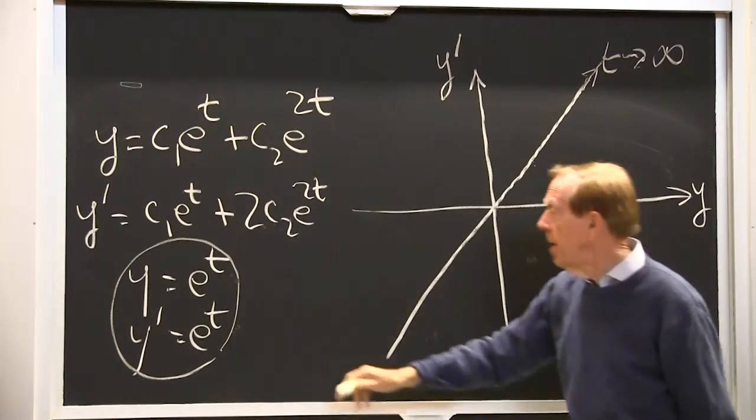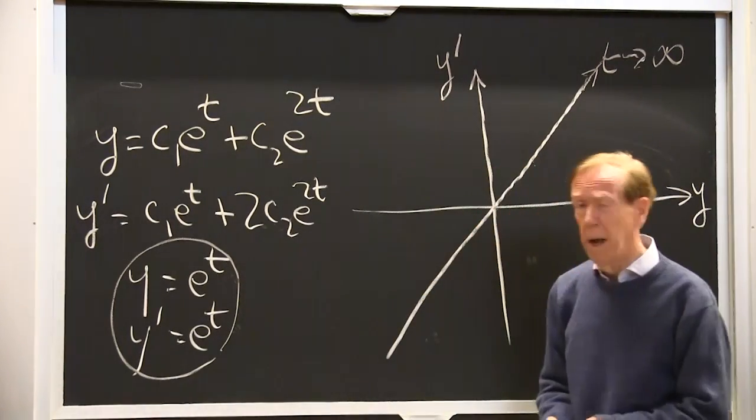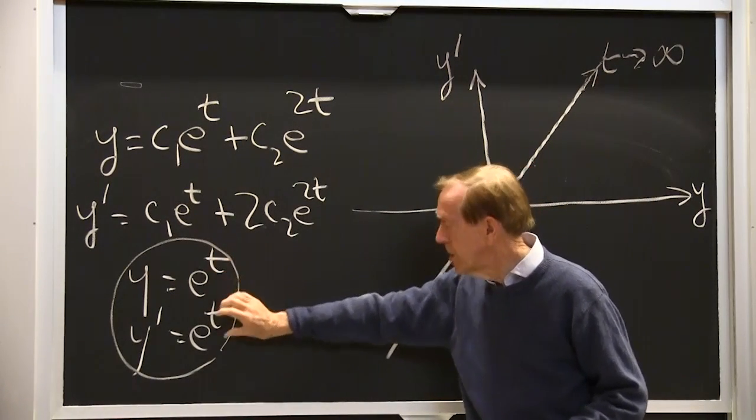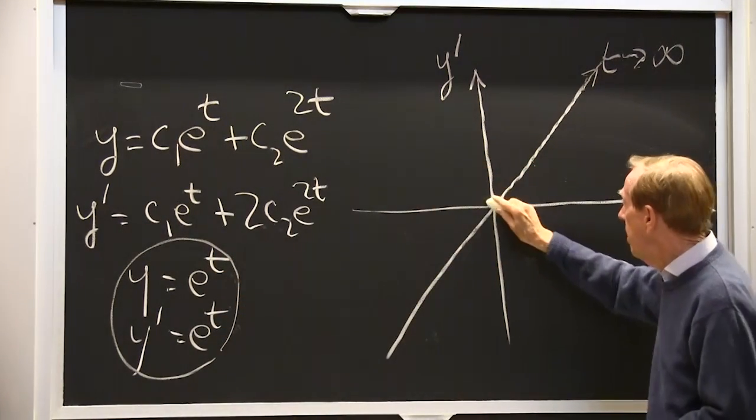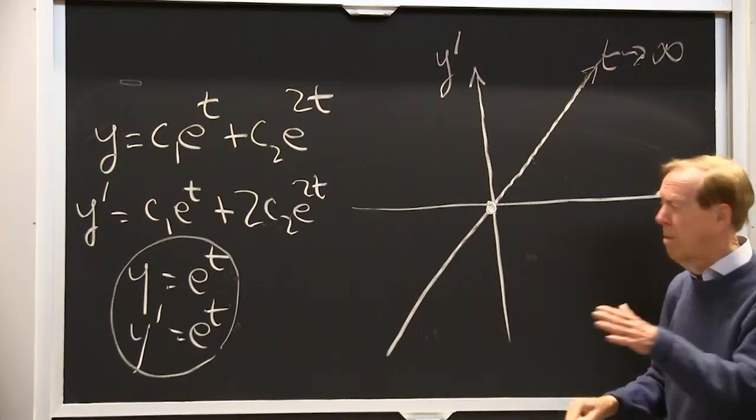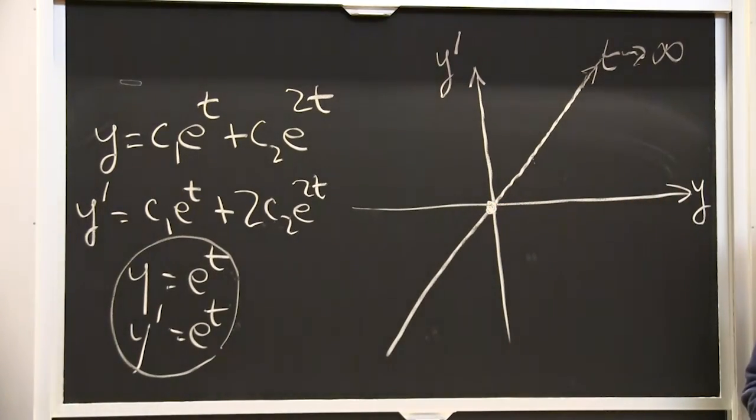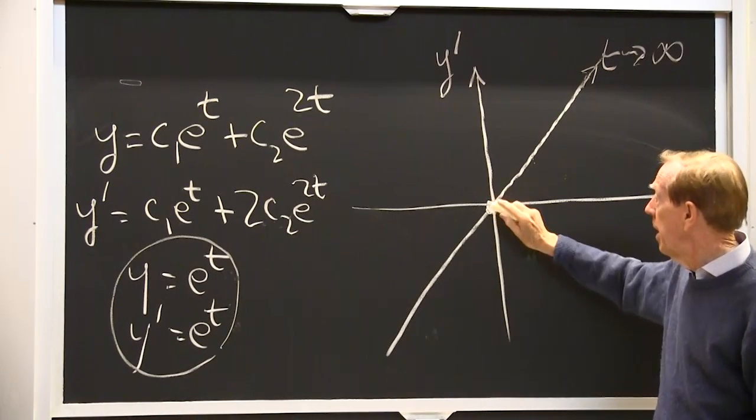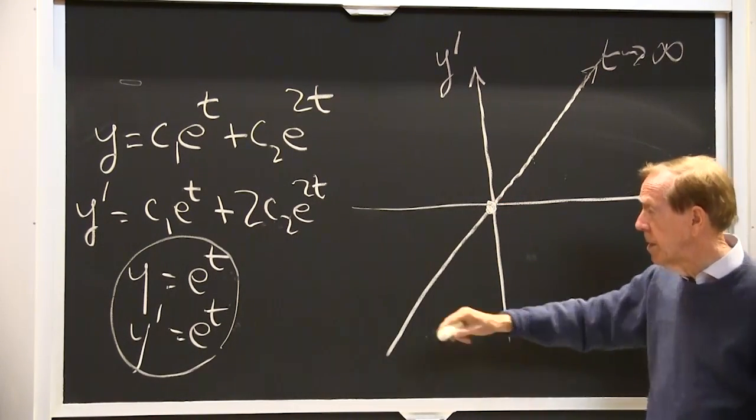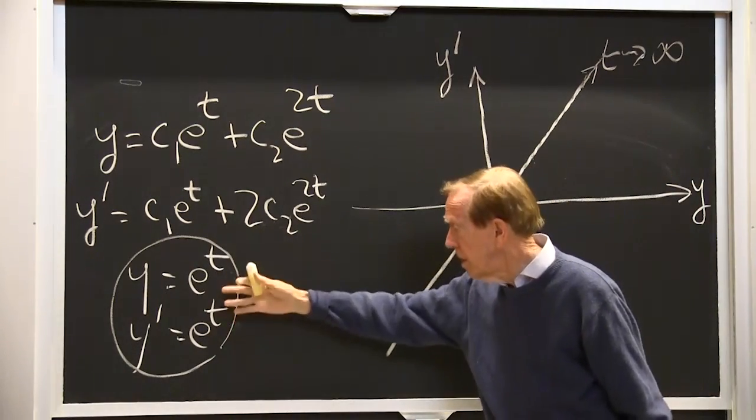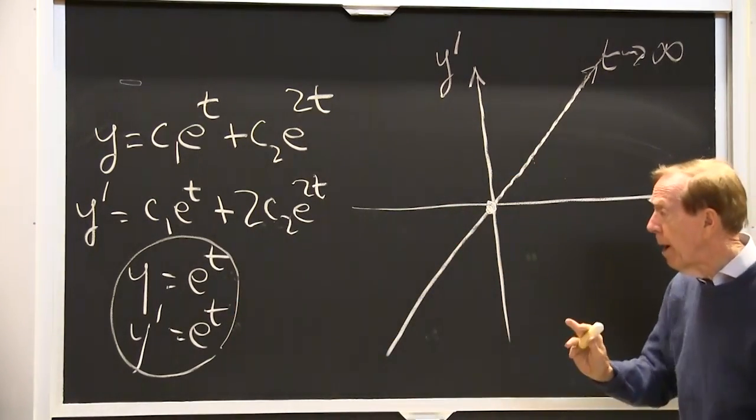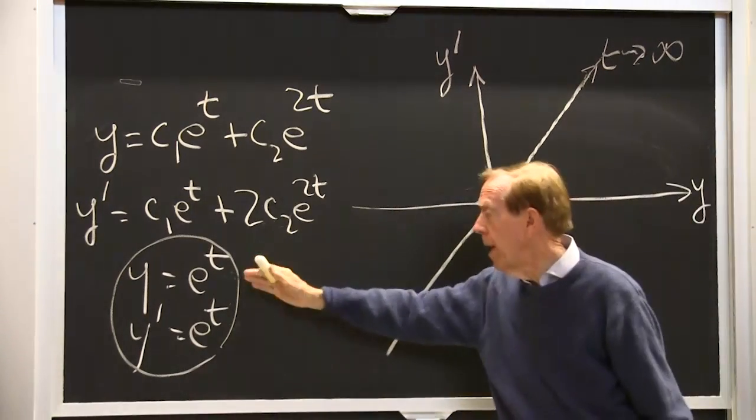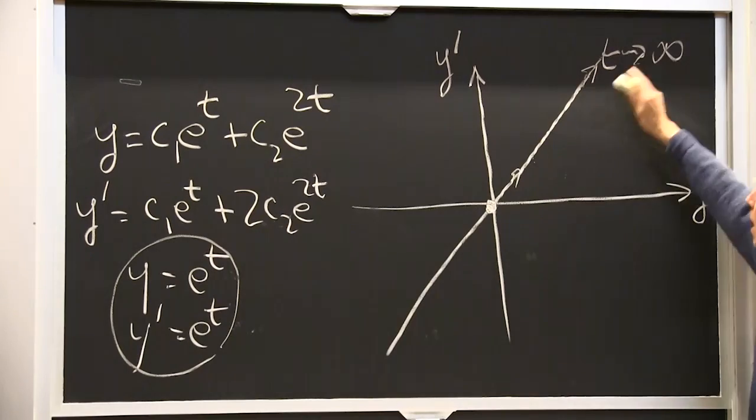As t increases, y and y prime both increase. I go out to t going to infinity. What about t going to minus infinity? When t goes to minus infinity, that goes to 0. Here is the point where the universe began. The big bang is right there at t equal minus infinity. As t increases, this point y, y prime is traveling along that 45 degree line because y equals y prime.